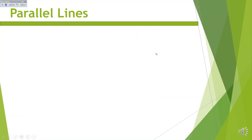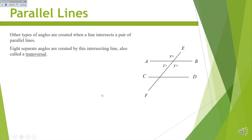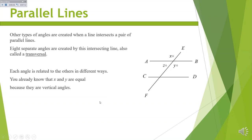Parallel lines create a whole bunch of different angles. Anytime we have a line that intersects a pair of parallel lines, look at all the angles we've got — eight different angles can be created. This line that cuts through those two parallel lines is called a transversal. When we talk about this line, we're always going to call it a transversal. If you don't know that term, you need to learn it now. Each one of these angles in parallel lines is going to be related to other angles in different ways.